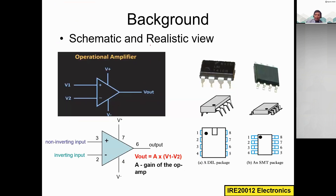If you look at the schematic and realistic view, this is the symbol of the operational amplifier. The symbol is simple and easy to understand. It has two inputs V1 and V2, two biasing voltages — a positive biasing voltage V+ and a negative biasing voltage V− — and a single output.